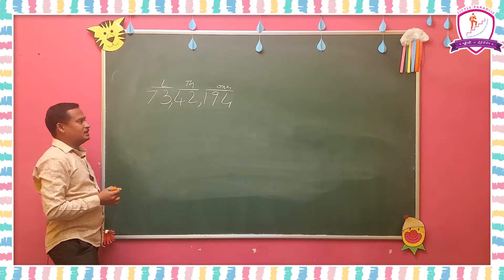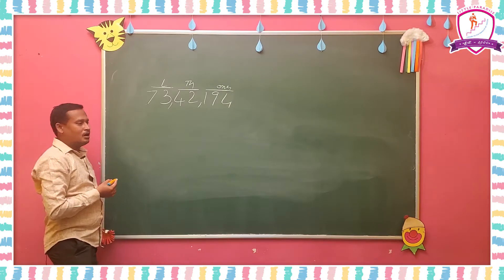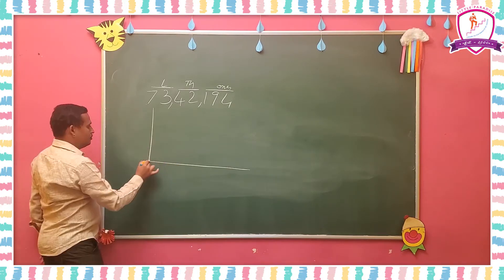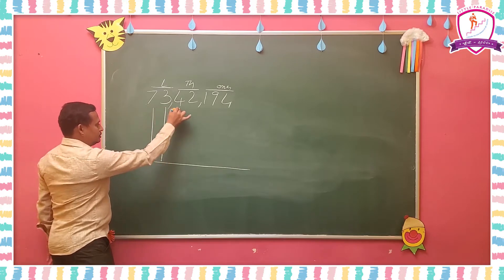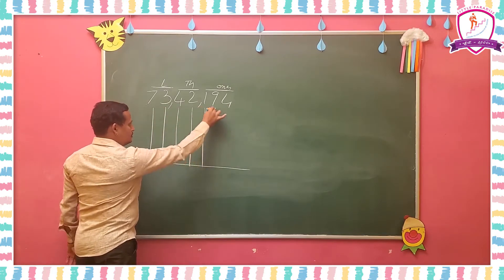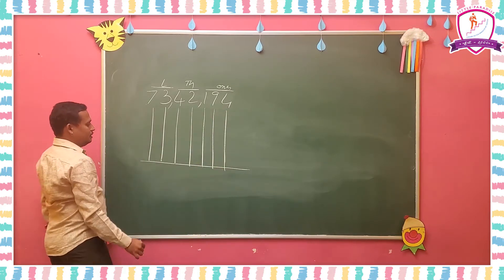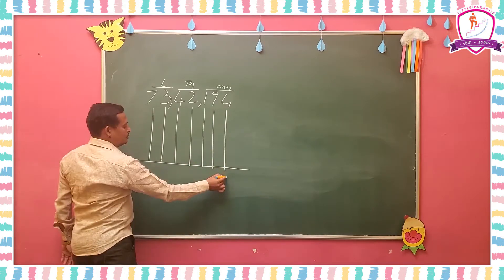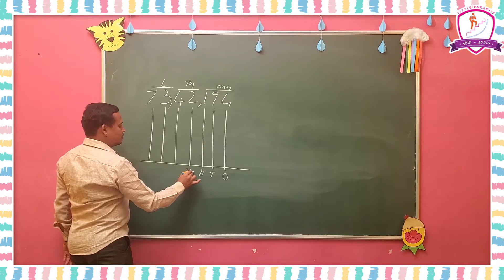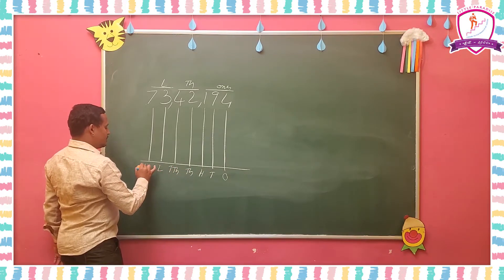How to represent the given seven digit number on the abacus? We count seven columns: 1, 2, 3, 4, 5, 6, and 7. Here the places are: 1s, 10s, 100s, 1000s, 10,000s, lakhs, and 10 lakhs.